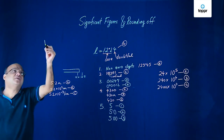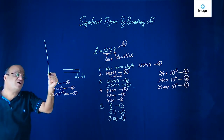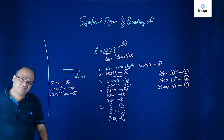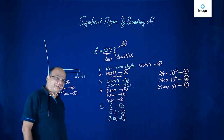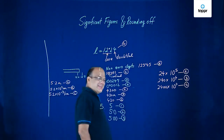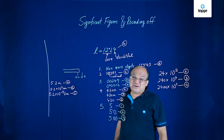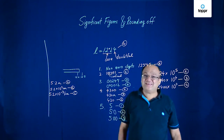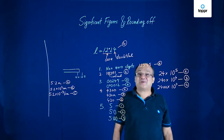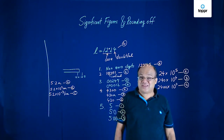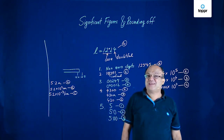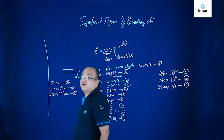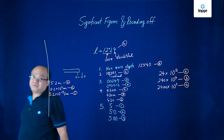Now we learn rules of rounding off. Most of it will be straightforward, but it becomes tricky when the digit you are dropping is 5. So let's try to understand the rules of rounding off.